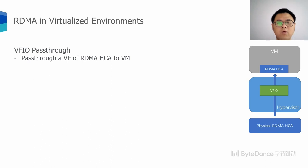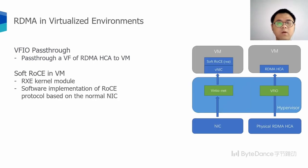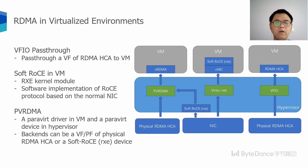Let's see how to enable RDMA in a virtualized environment. There are several solutions. The most widely used one is the VF passthrough solution. With SR-IOV technology, we can create some virtual functions from the RDMA adapter, then use the VF passthrough technology to pass through the RDMA virtual function to a VM. Another solution is enabling the SoftRoCE kernel module, which is a software implementation of RoCE protocol based on the normal network stack. The third one is PVRDMA technology, a paravirtual solution with a paravirtual driver in the VM and a paravirtual device in the hypervisor, with a back-end that can be exposed either by a SoftRoCE device or a hardware RDMA virtual function.